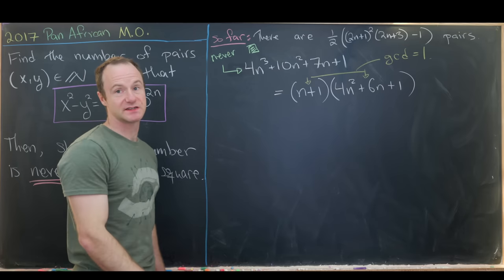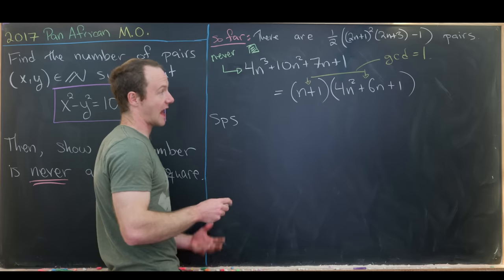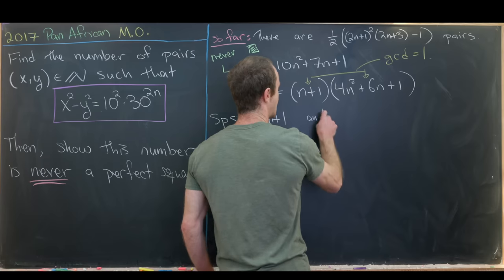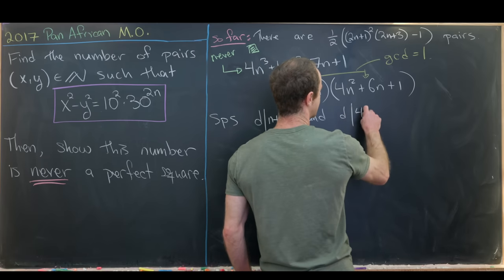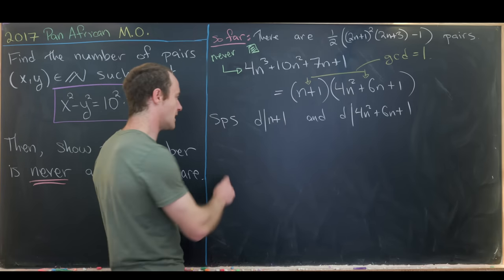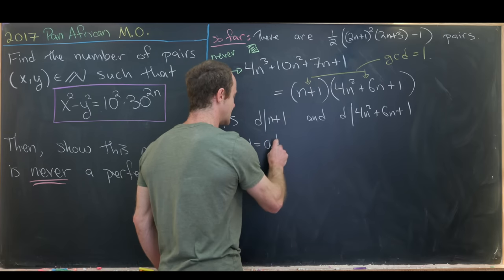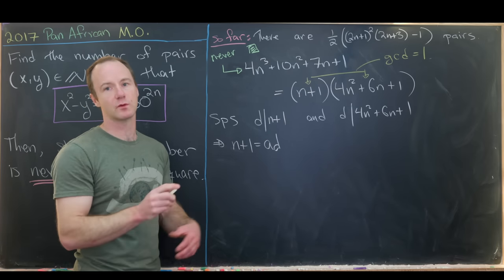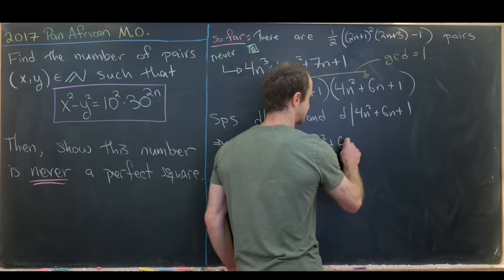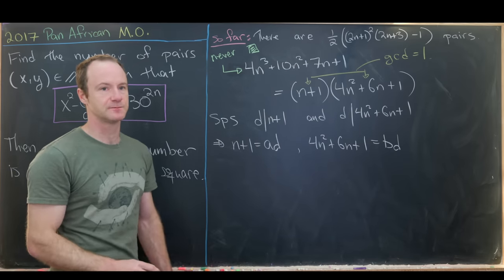We'll prove this by supposing d divides both (n+1) and (4n² + 6n + 1), then showing d must equal 1. By the definition of divisibility, write n+1 = a·d and 4n² + 6n + 1 = b·d.